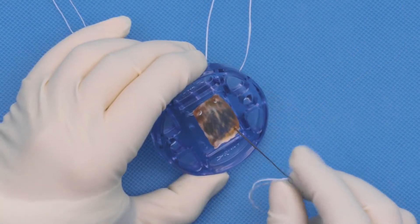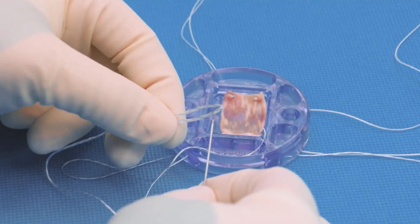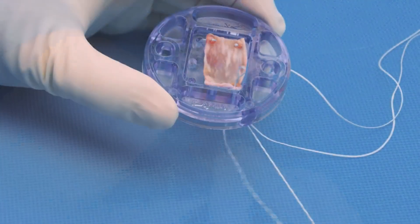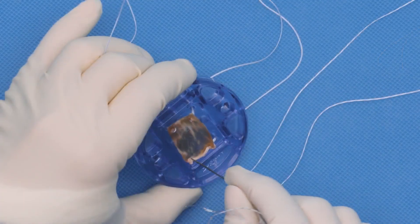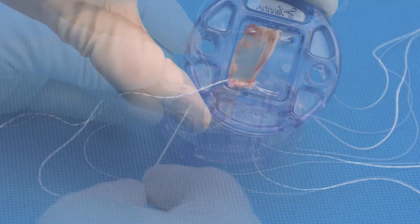Using the same keith needle, the fiber link suture tape is passed through the corner of the graft in a mattress configuration. Repeat on the opposite corner with a tiger link suture tape.